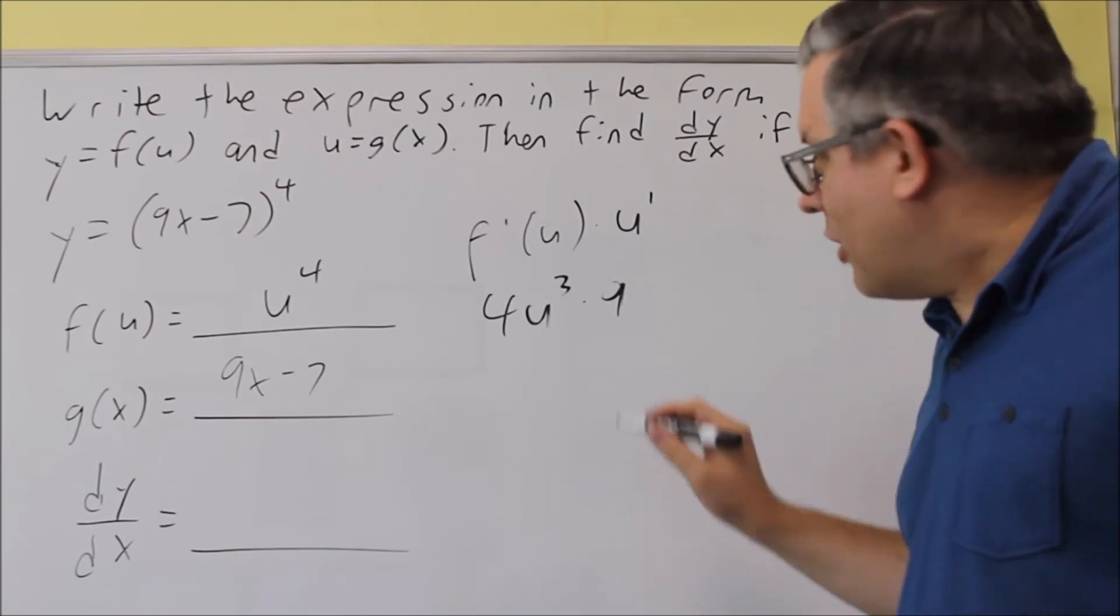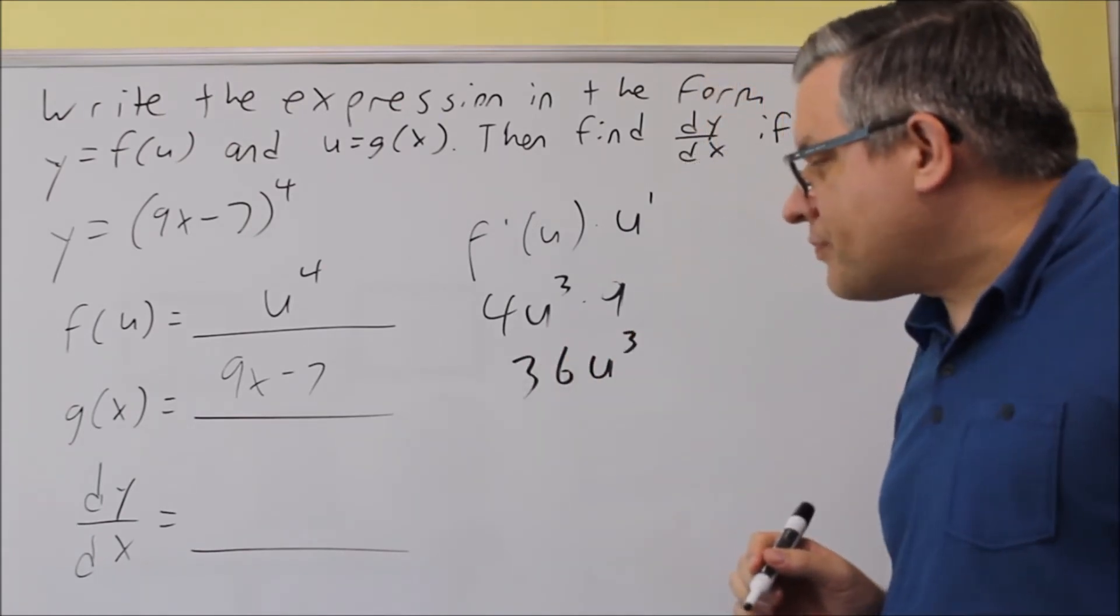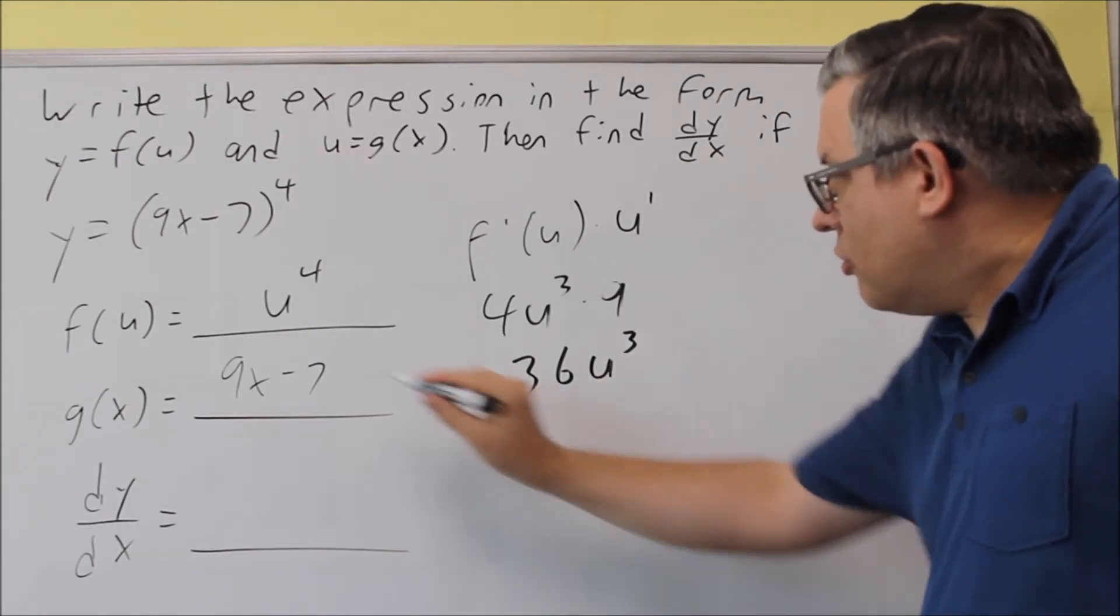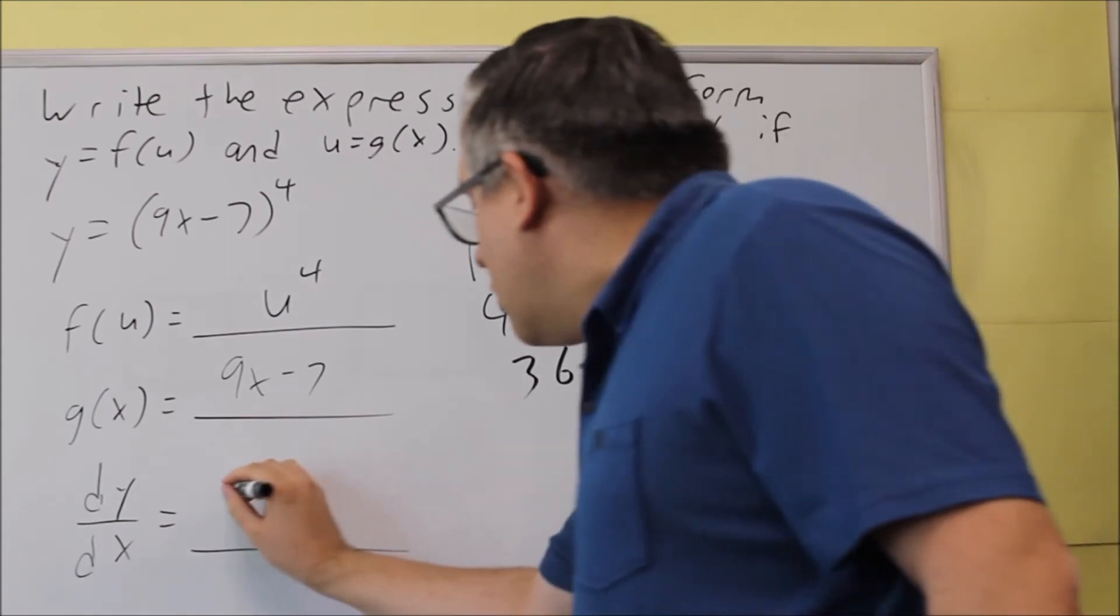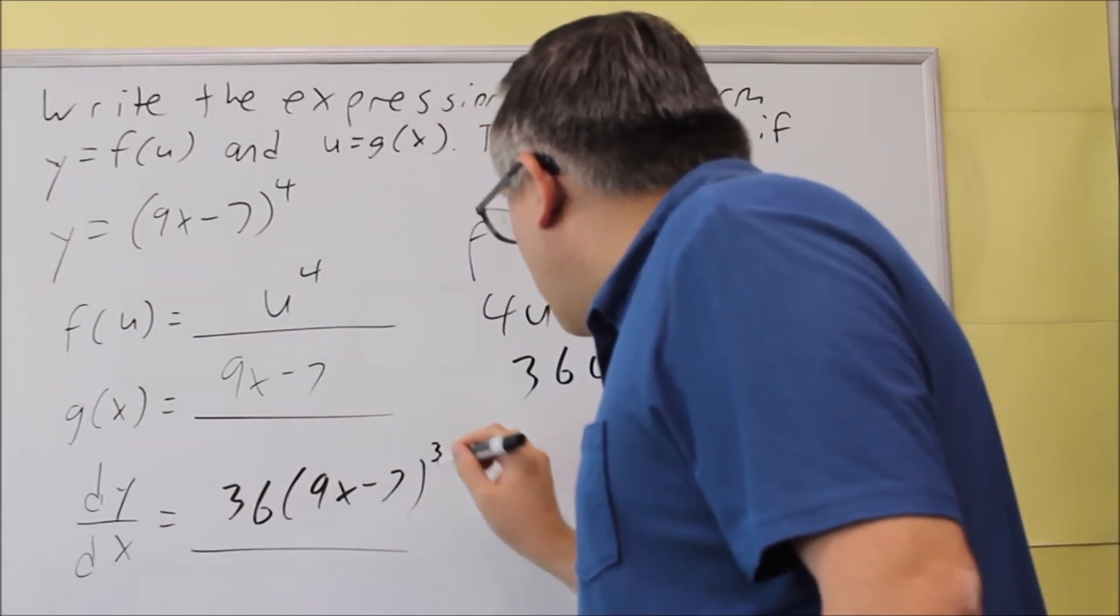When we put this together, we get 36 u cubed. To write your answer, the last thing you're going to do is replace the u with our 9x minus 7. And so, we get 36 (9x minus 7) to the third power.